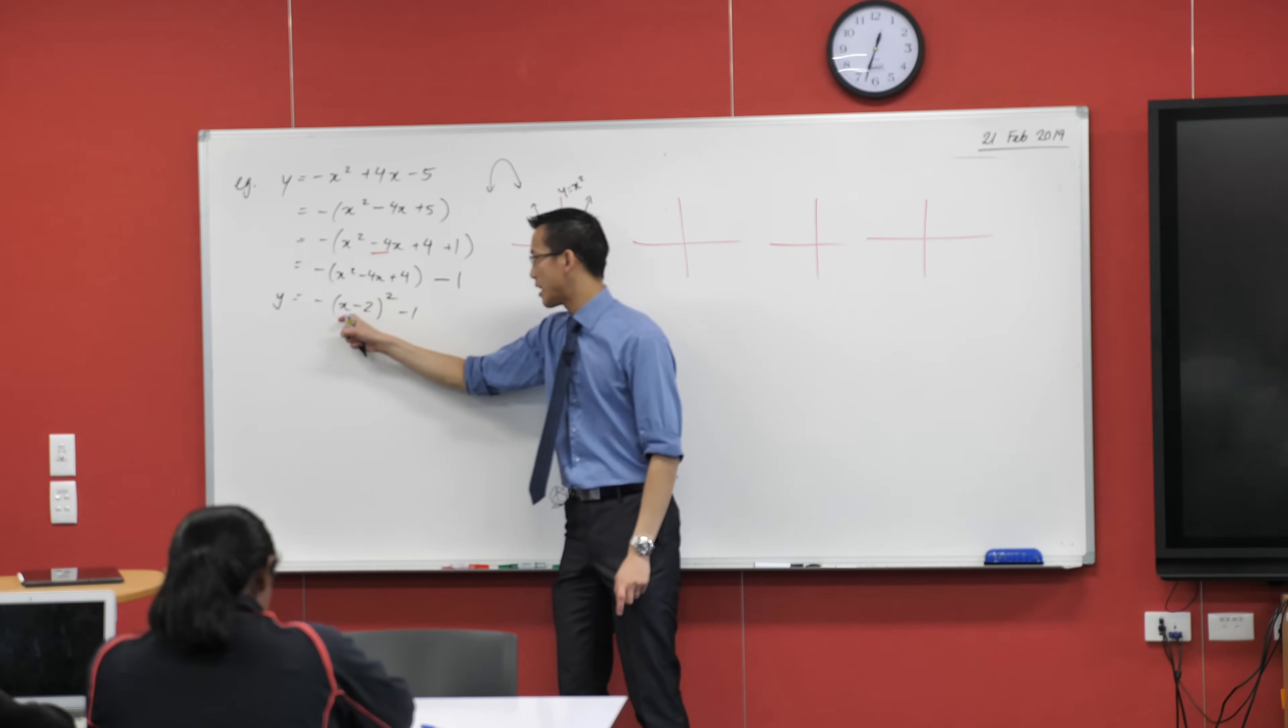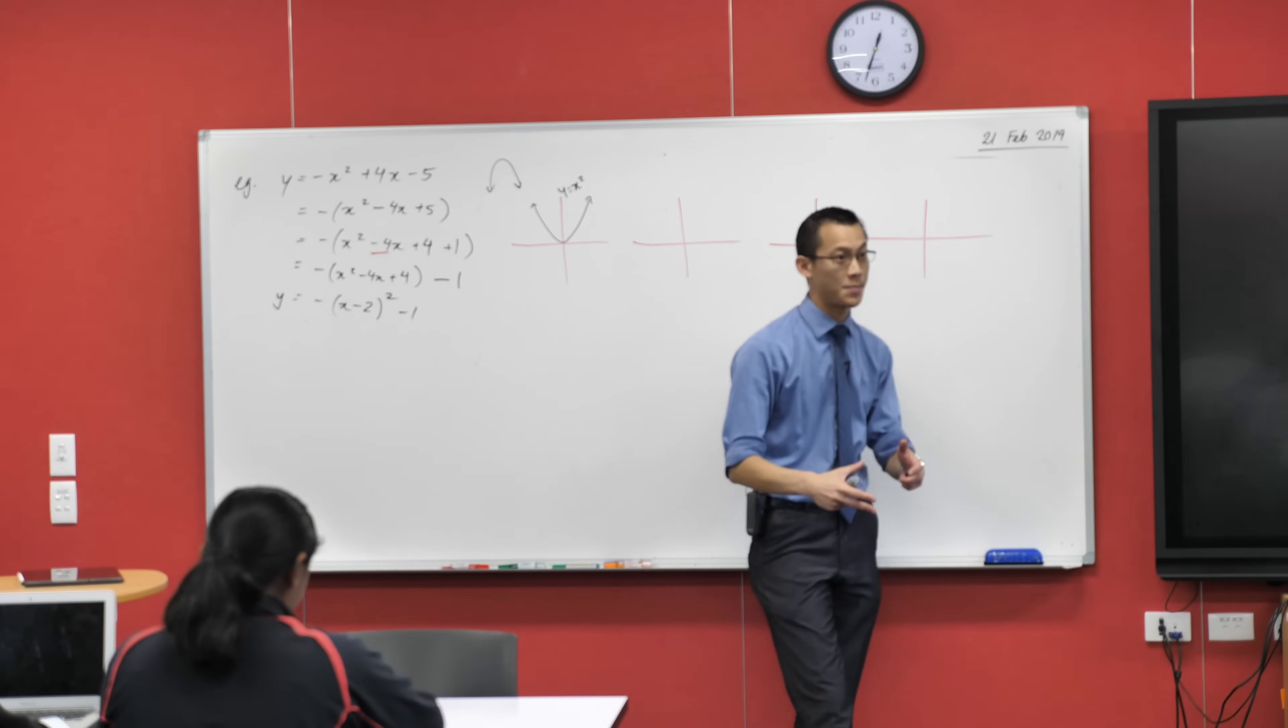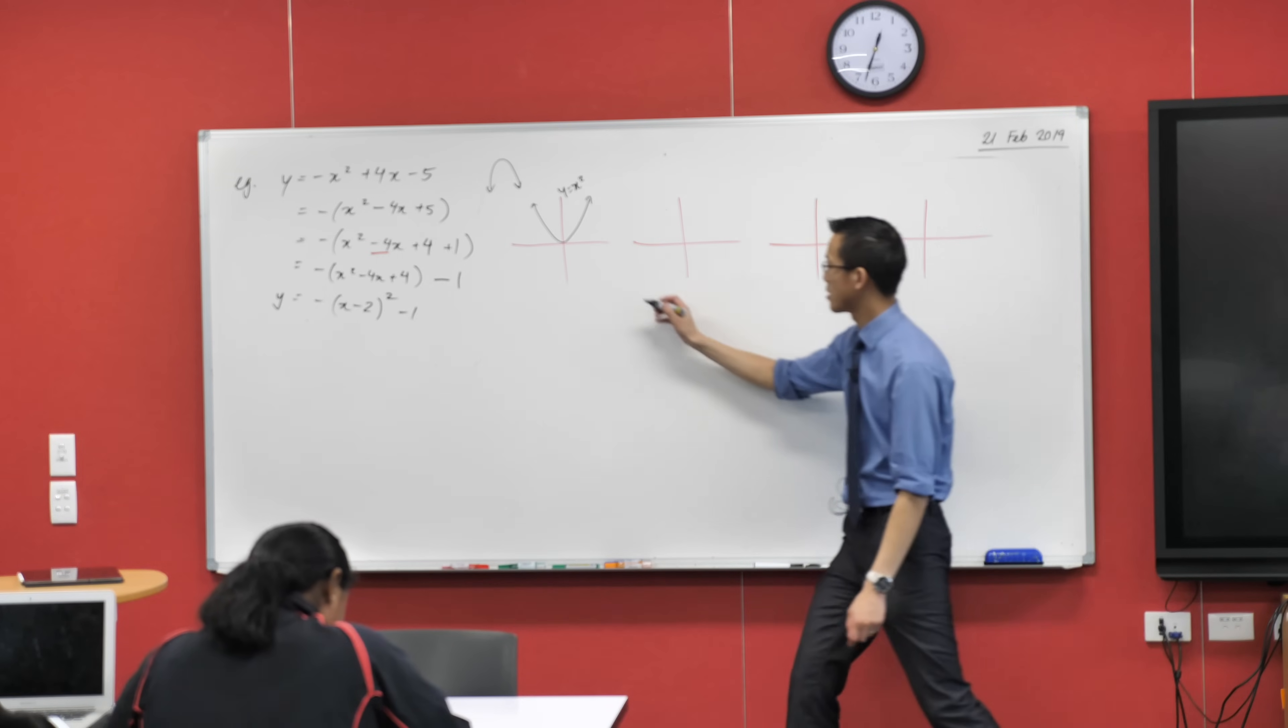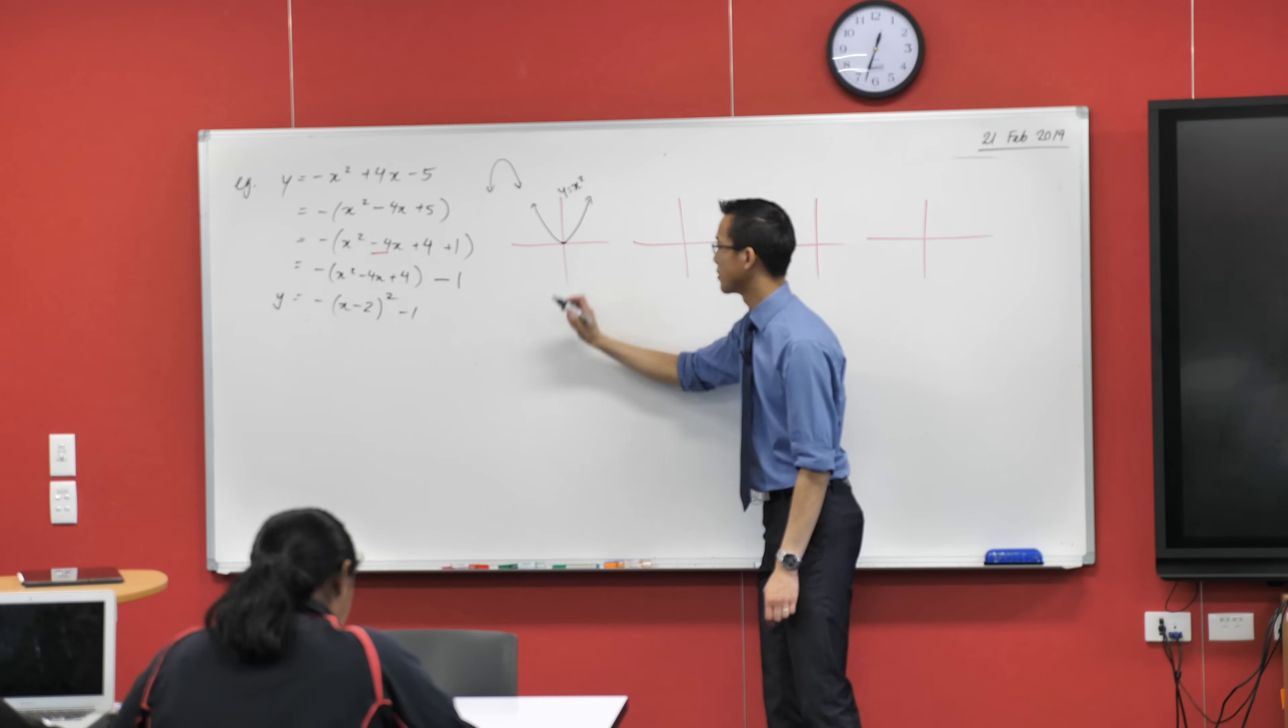This is just a regular old y equals x squared parabola. Y equals x squared. Now we then change it in a bunch of ways, and you can see all of these bits and pieces, they all make minor adjustments to this same parabola. Sorry, that's a bit bad. It should go right through the origin.